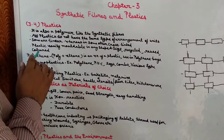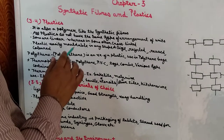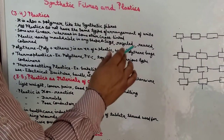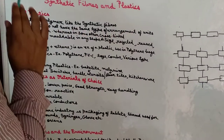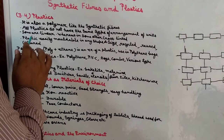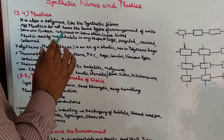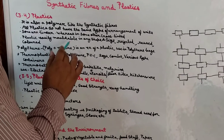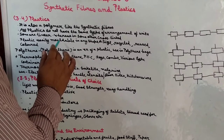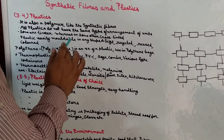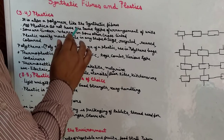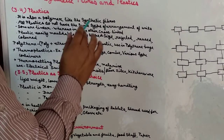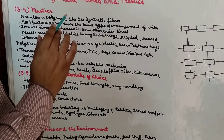Next point है: plastic is really moldable in any shape and size. यह property of plastics है. Moldable का अर्थ है कि इनको heat करके किसी भी shape और size में mold किया जा सकता है.